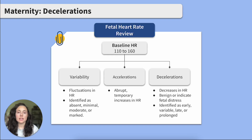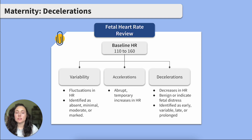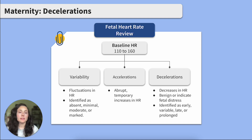Fetal heart tones give us an idea of fetal well-being during labor. Let's look at the key components of fetal heart rate. A baseline heart rate is the average heart rate over a 10-minute period, and the normal range is between 110 and 160 beats per minute. Variability is a term for the fluctuation in the baseline heart rate and can be identified as absent, minimal, moderate (which is normal), and marked.